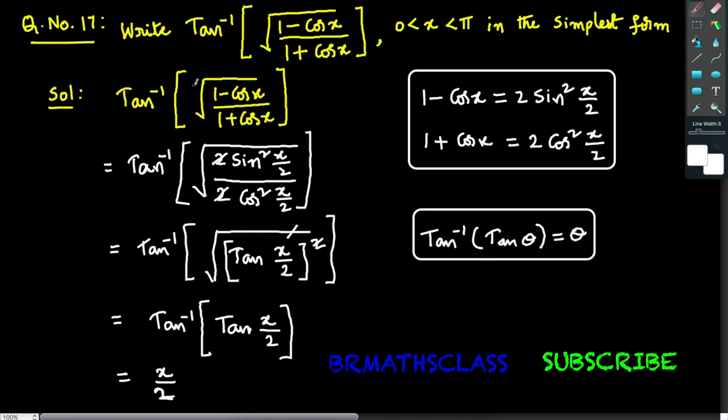Therefore, the simplest form of tan inverse of square root of (1 minus cos x) divided by (1 plus cos x) is x/2. I hope you understand this class.